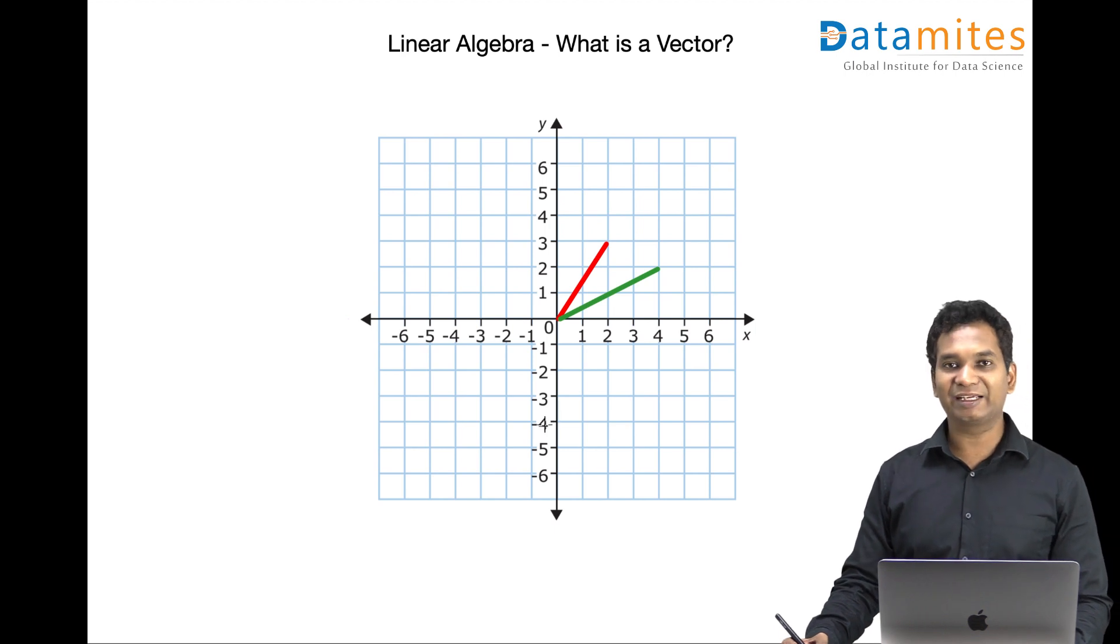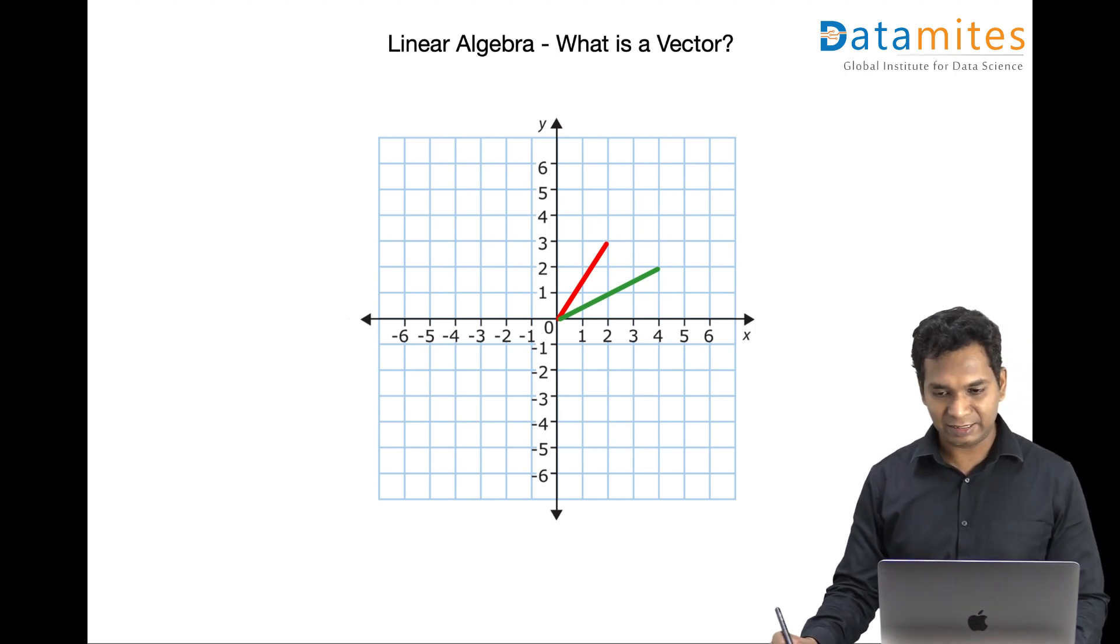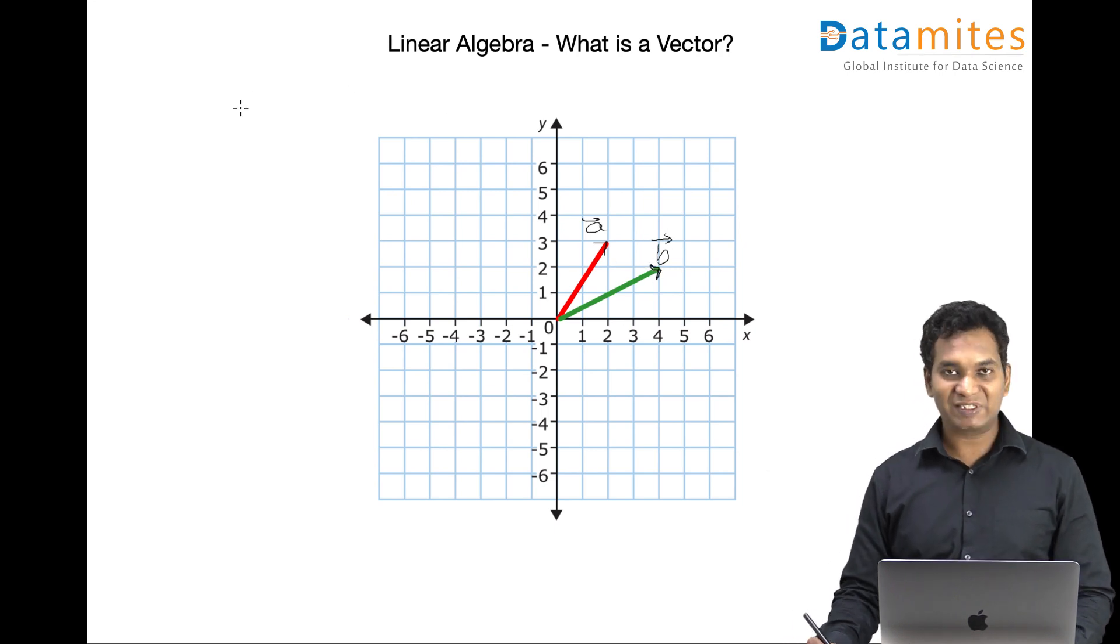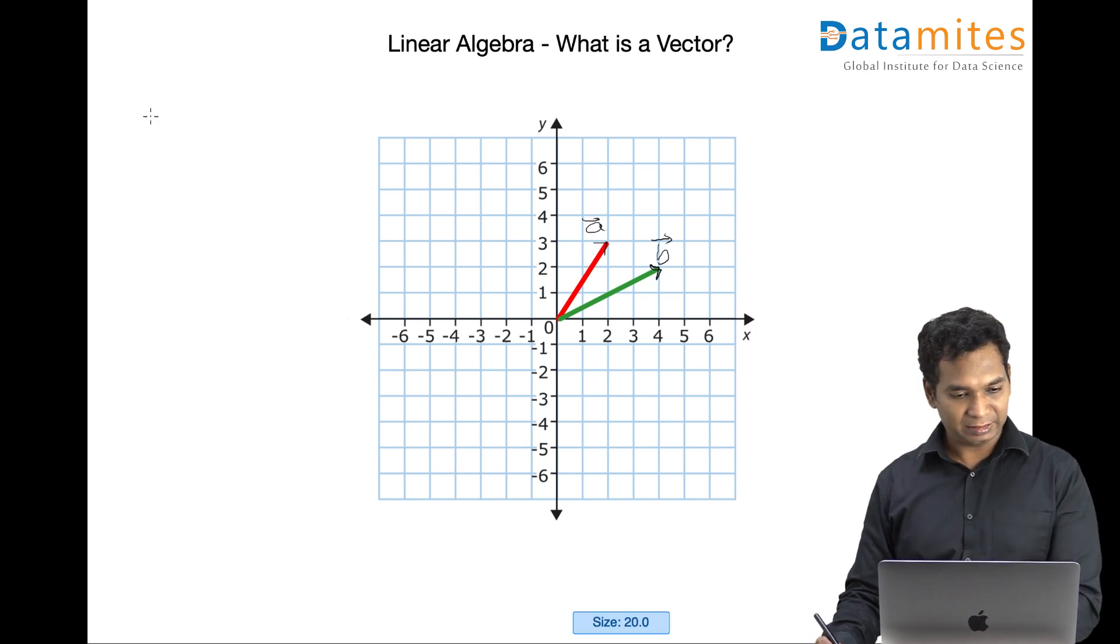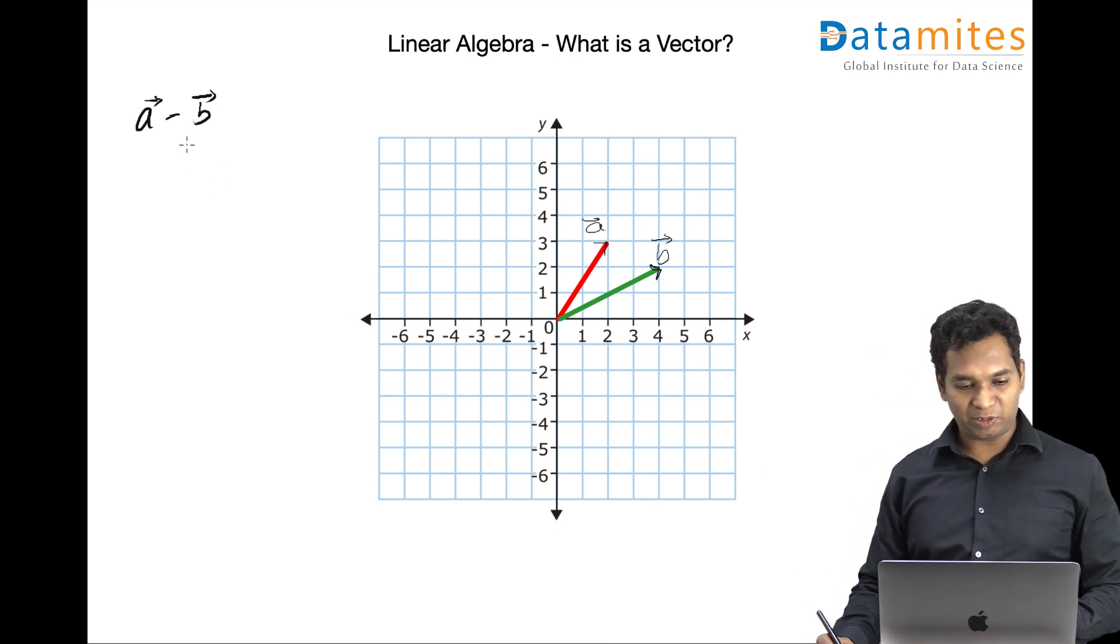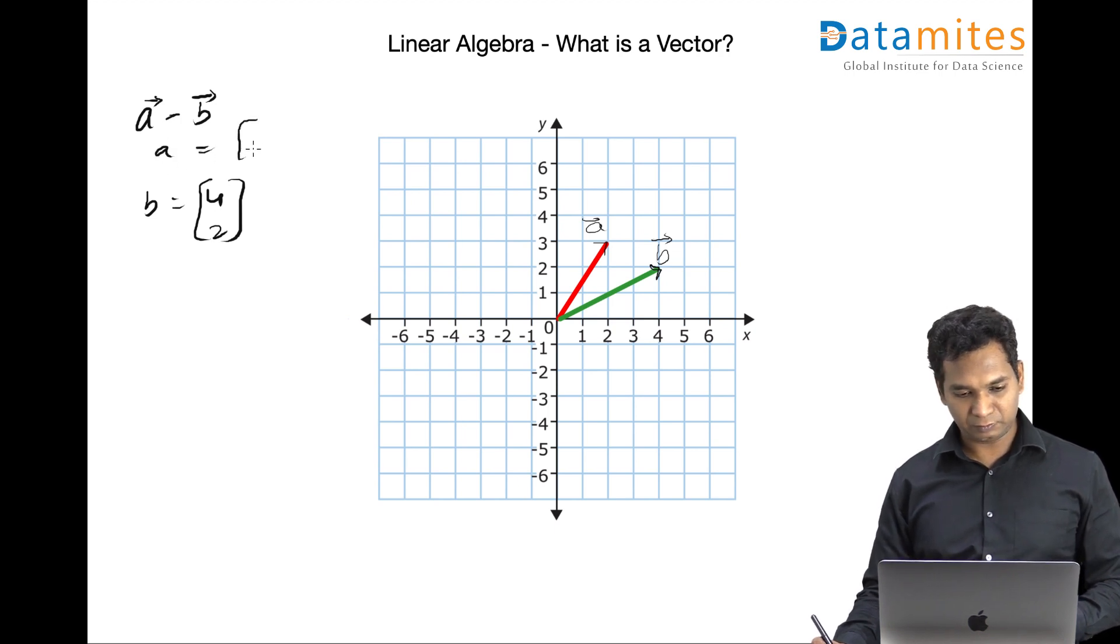So when you're subtracting it, we actually take a negative. For example, let me call this as vector a. So when it's a vector, we can put a small directional arrow over it, representing it's a vector. So we have seen a plus b. Now we are looking at a minus b. So when you say minus, we reverse the vector. And then it becomes negative. For example, the vector b is four comma two, represented like this. And the vector a is two, three. So when we say a minus b, we're talking about two, three minus four and two.